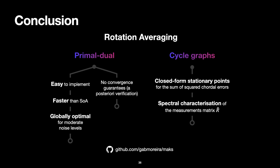To conclude, our paper addressed rotation averaging, making two main contributions. One is the primal-dual method, which is very easy to implement, faster than the state of the art, and reaches globally optimal solutions. We do not provide convergence guarantees, but these can be verified along the iterations a posteriori. For cycle graphs, we set forth closed-form expressions for the stationary points and provided a spectral characterization of the matrix of measurements. The code is available on GitHub. Thank you for watching.